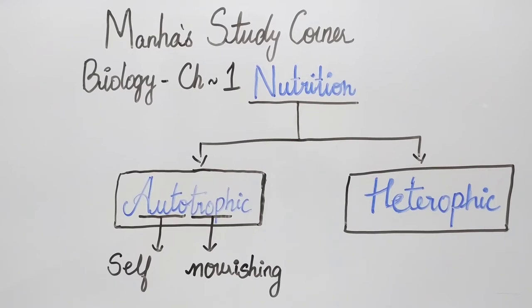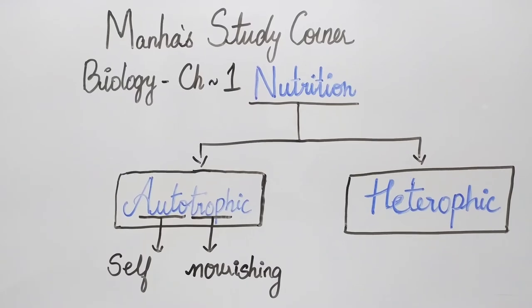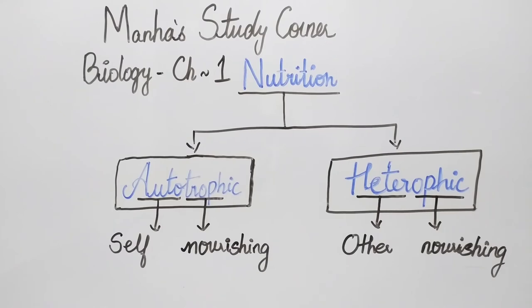Autotroph is a biological term that breaks down to mean self-nutrition. Hence, autotrophic organisms synthesize their own food from simple inorganic substances using photosynthesis. In heterotrophic nutrition, as the name suggests, it is other nutrition, which effectively means they obtain their food from sources other than photosynthesis.